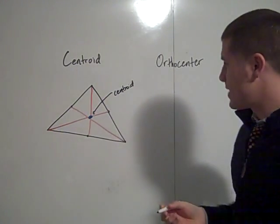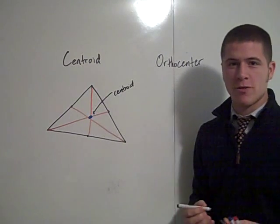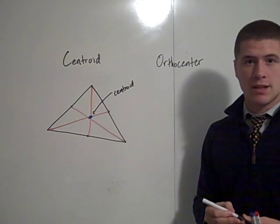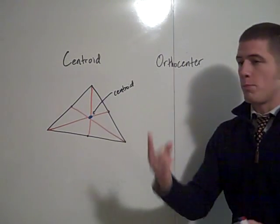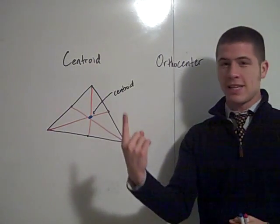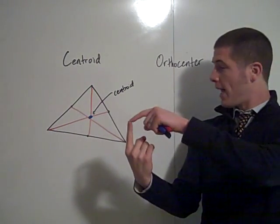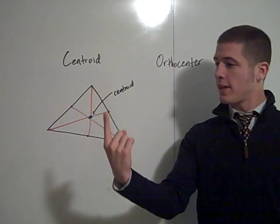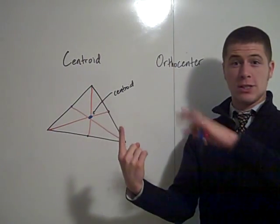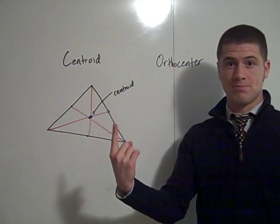In physics that's called the center of mass — it's the balancing point. So if you could balance that triangle on your finger at the centroid, then it would just sort of sit there.